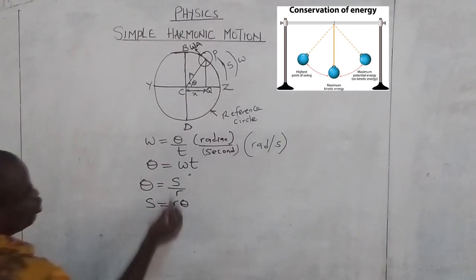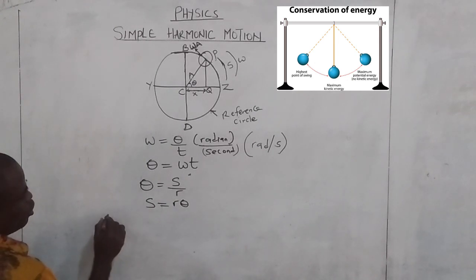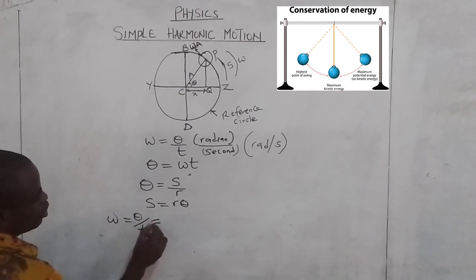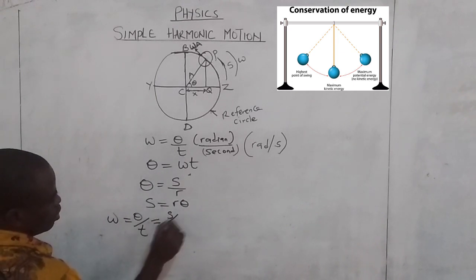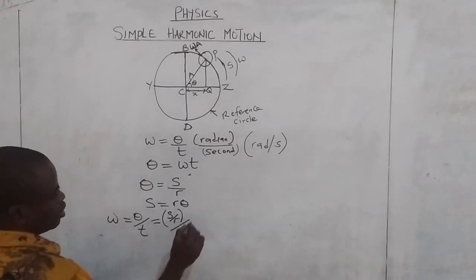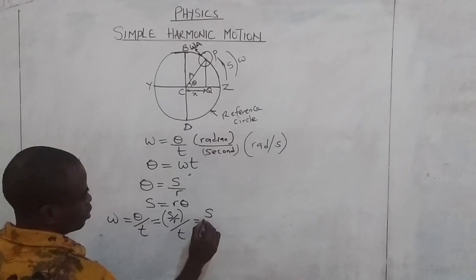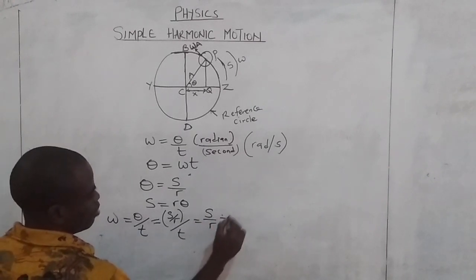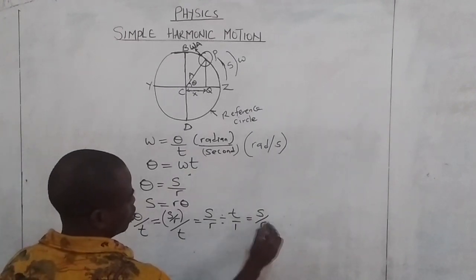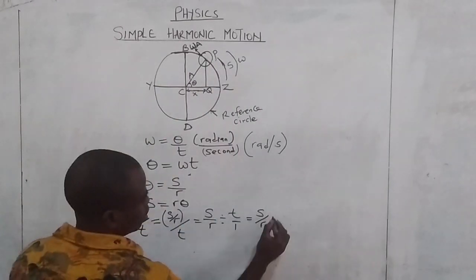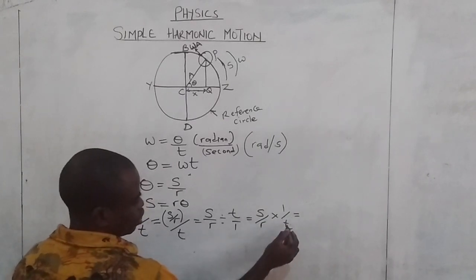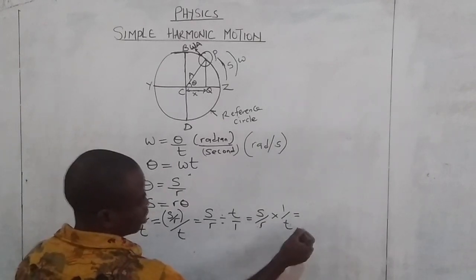As we continue, we are going to make some substitutions. We have angular velocity equals theta over t, which is s over r, divided by t. The distance over radius divided by t gives us distance over radius times 1 over t. We are doing this because we want to get an expression for s over t.